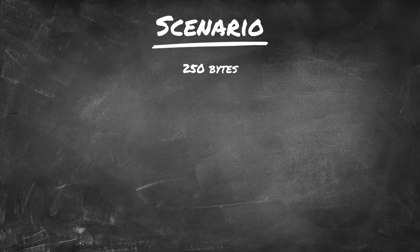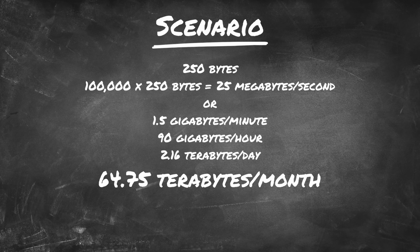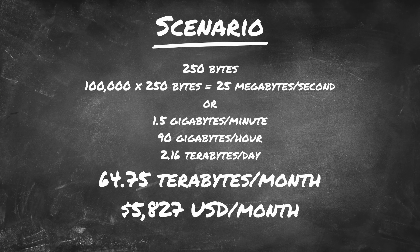So how much does this kind of data flow actually cost us? First, let's look at the bandwidth cost. This isn't a cost we can easily change — data is data. We might compress data, but that adds a lot of complexity. So for now, we'll assume we're sending data as it's generated. Assuming each message is around 250 bytes, that adds up to about 64.75 terabytes of data per month. Our broker charges reasonably per gigabyte, so it actually only costs us $5,827 per month to transfer all of that data.